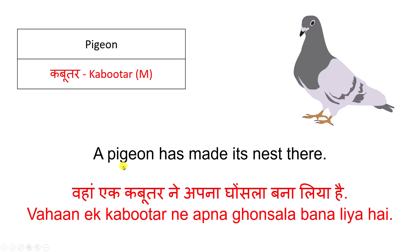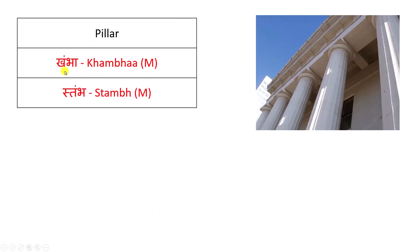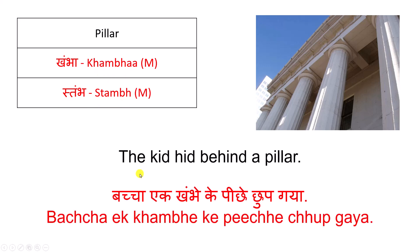कबूतर — Pigeon. Pillar — खंभा — स्तंभ। The kid hid behind the pillar. बच्चा एक खंभे के पीछे छुप गया। खंभा — Pillar.